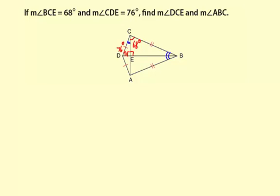So for triangle DEC, we have 76 degrees plus 90 degrees plus measure of angle DCE equals 180 degrees. Now we'll combine here, 76 degrees plus 90 degrees, that is 166 degrees, plus measure of angle DCE equals 180 degrees.